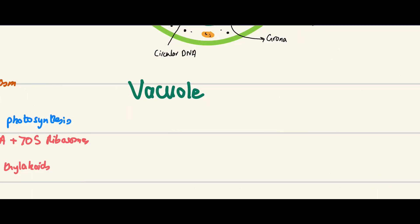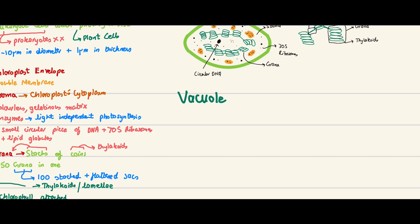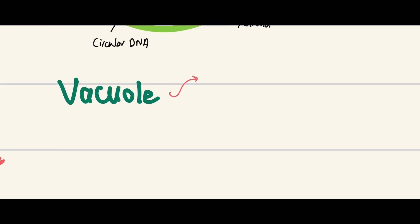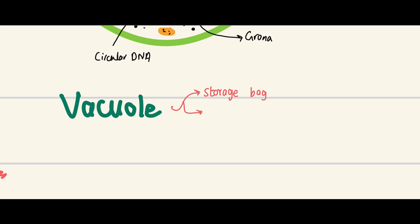I've decided to add the vacuole to this video because it comes up a lot when discussing plant cells and chloroplasts. A vacuole is essentially a storage bag. It stores water, ions, sugars, and pigments.